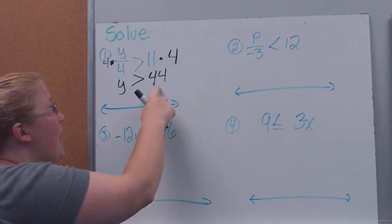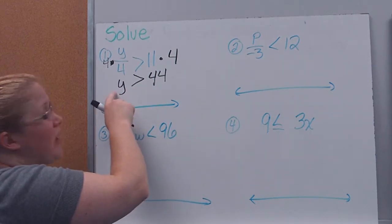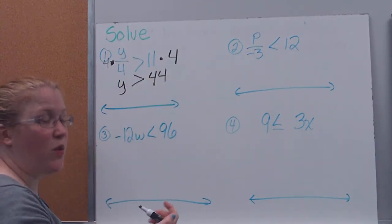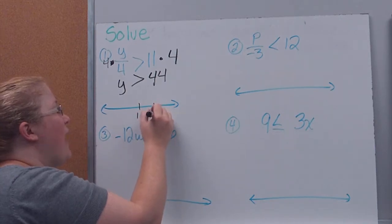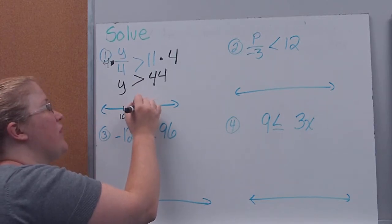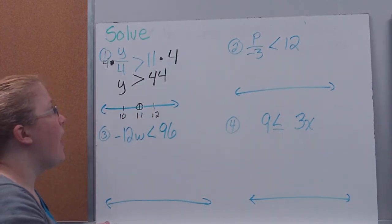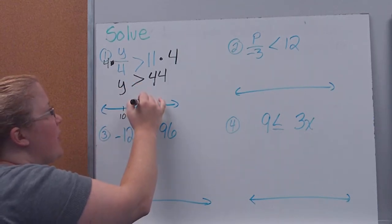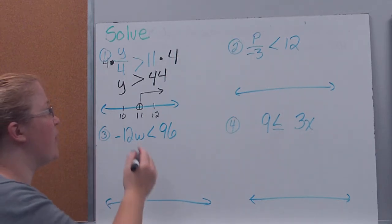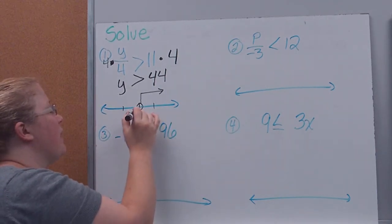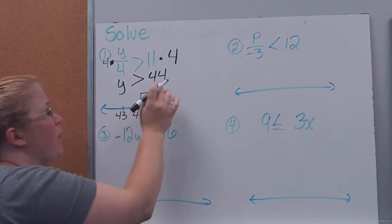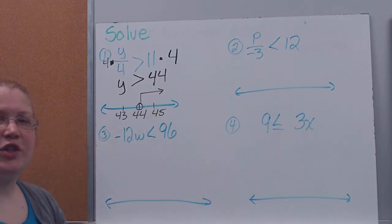We can check it: I'd pick 48 because it divides evenly. 48 divided by 4 gives 12, and 12 is greater than 11, so I know I'm right. To graph that, we mark 44 on the number line. This is not equal to, so I use an open circle. My variable is on the left, so I can use the trick where the sign shows me the direction the arrow faces — I'm looking for values greater than 44.